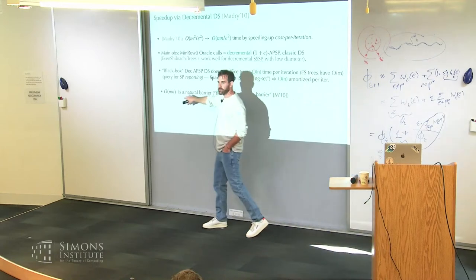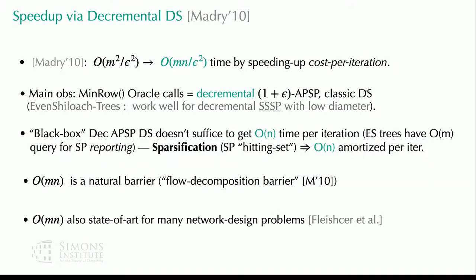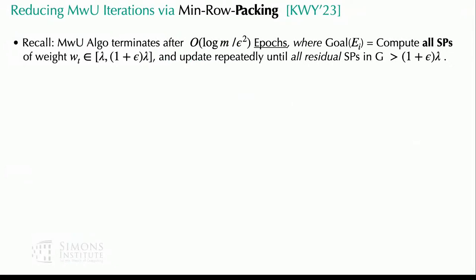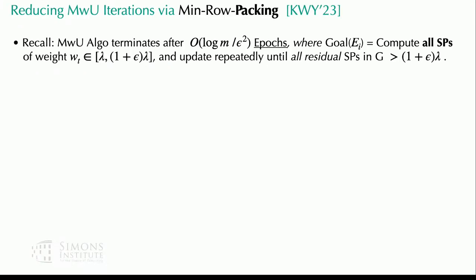The state of the art is O(MN / epsilon^2). Madri argues this is a kind of natural barrier. MN is the state of the art not just for multi-commodity flow but for many other network design problems. Madri and Fleischer never touched the iteration complexity — their goal was solely to improve the cost per iteration. The starting point of our work is to show that if you replace the min-row shortest path oracle with a somewhat stronger oracle, the iteration complexity of the Garg-Konigman algorithm reduces dramatically.